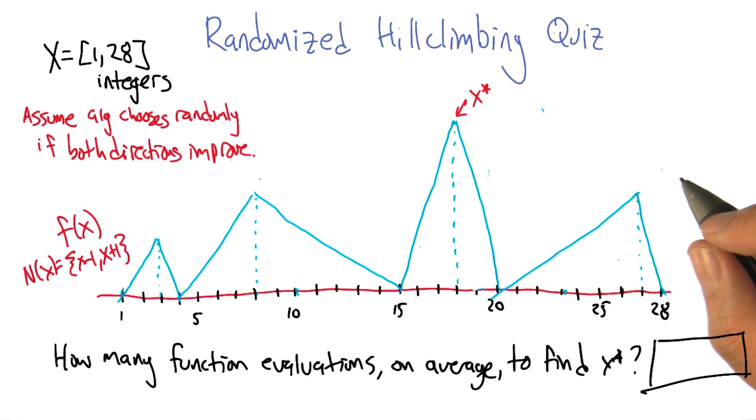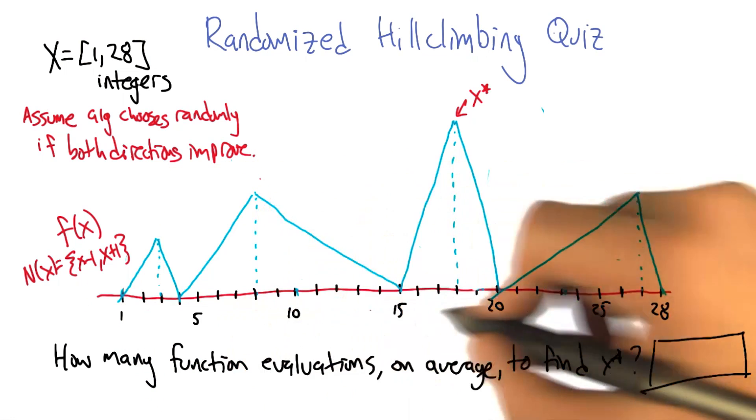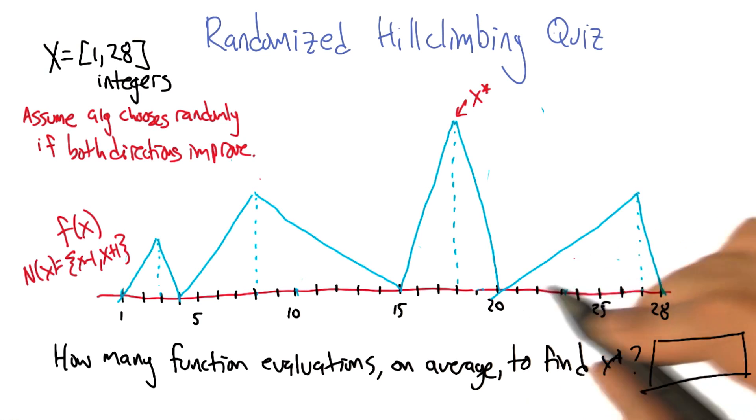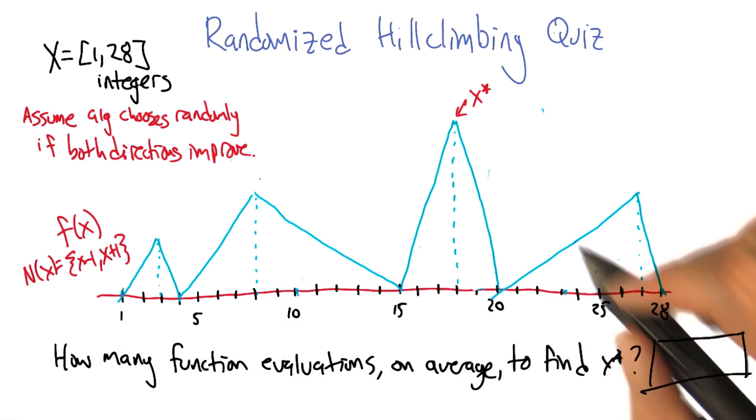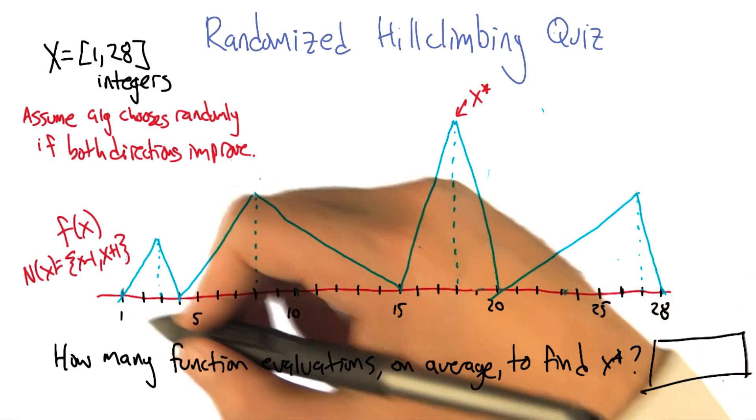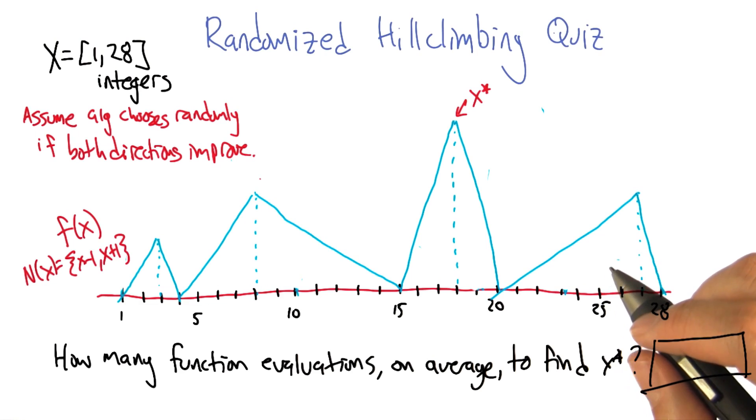All right, so there's a bunch of ways you could imagine doing this, and here's how I would suggest looking at it. For each of these 28 positions, there's some number of steps that it's going to take before it either resets, that is to say, rechooses at random, or has actually reached the tippy top. So let's actually evaluate these.